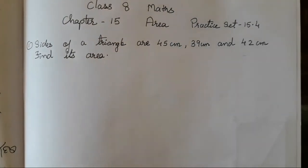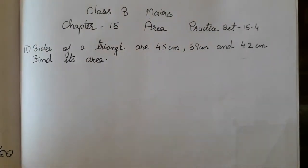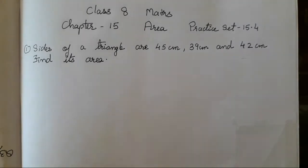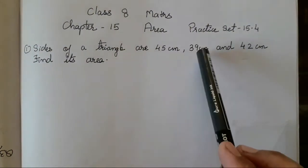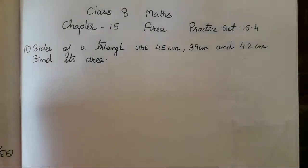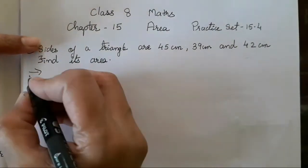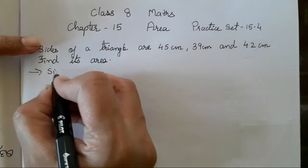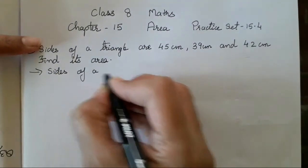Hello everyone, today we are going to do Class 8 Math Chapter 15, Area, Practice Exercise 15.4. We are going to complete it today. Let's start with the first example: sides of a triangle are 45, 39, and 42 centimeters. Find its area. So first we have to write what has been given.